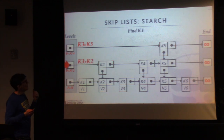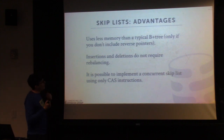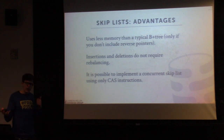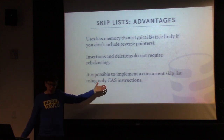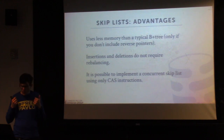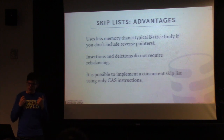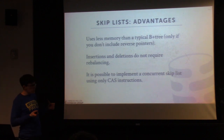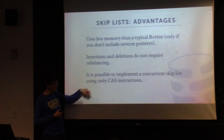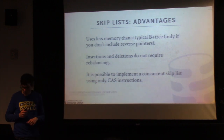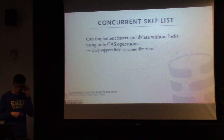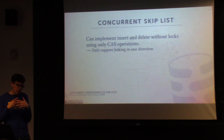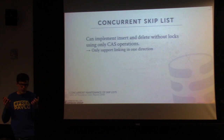The advantage of a skip list is that it uses less memory than a typical B-plus tree — partly because you're not storing pointers in the reverse direction. The BW-tree by contrast has to maintain a whole separate mapping table for indirection, which takes more memory. Also, as you'll read, there are ways to have more compact skip lists by combining nodes together. Another advantage is that insertions and deletions do not require rebalancing, because you're doing compare-and-swap to insert the new entry. And because we can do compare-and-swap, we can make this latch-free with concurrent access quite easily.